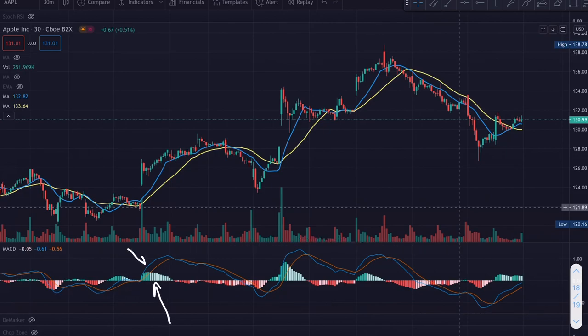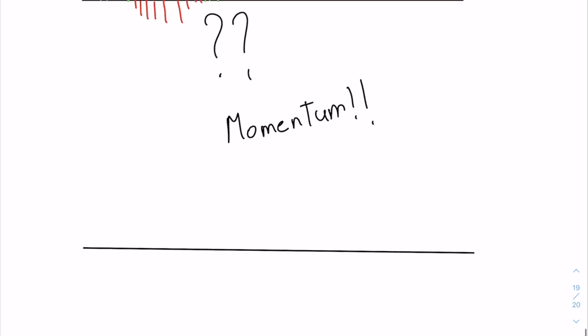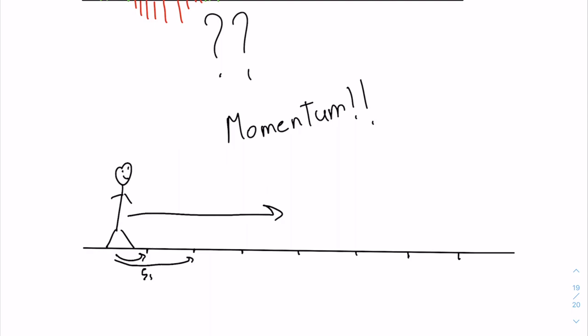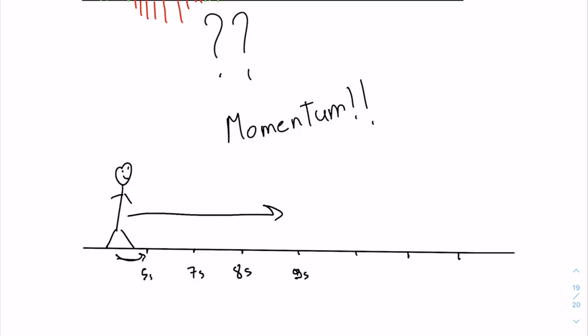You've probably seen the MACD indicator which includes the histogram, the signal, and the 9 EMA line of the signal. But have you ever wondered what this histogram is? The histogram indicates momentum. Imagine a guy running a track — the first 50 meters takes five seconds, 100 meters takes seven seconds, eight seconds for 150, and nine seconds for 200 meters.